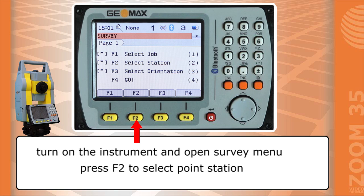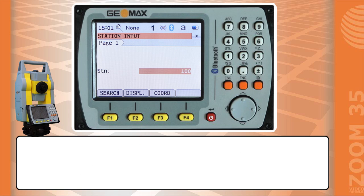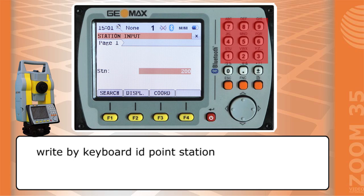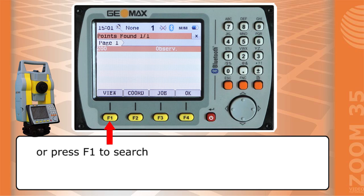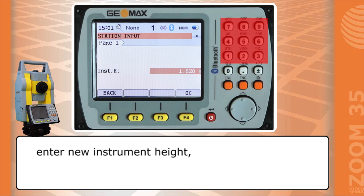Press F2 to select point station. Write by keyboard the point station. Press F1 to search. Enter new instrument height. Press F4 to confirm.